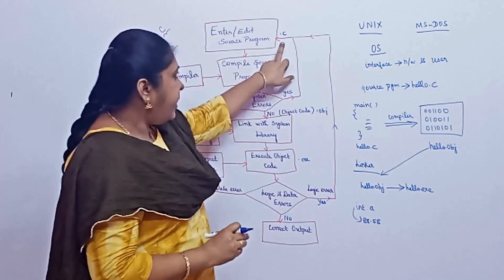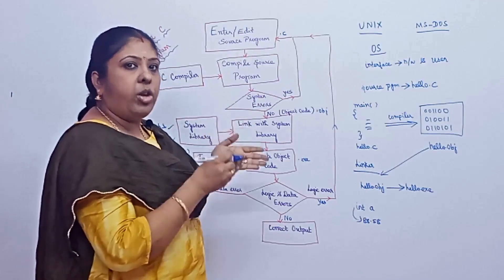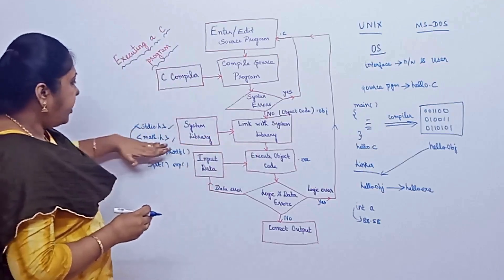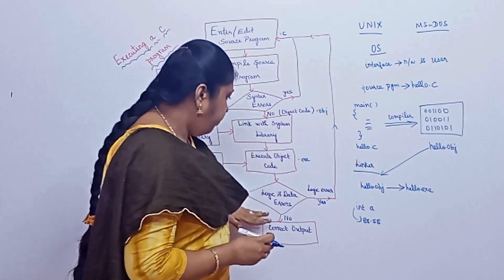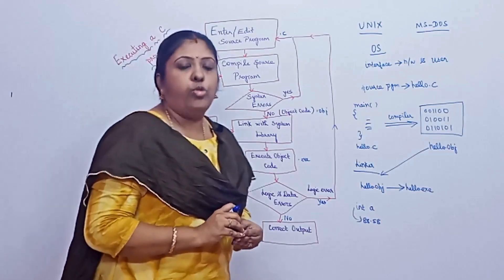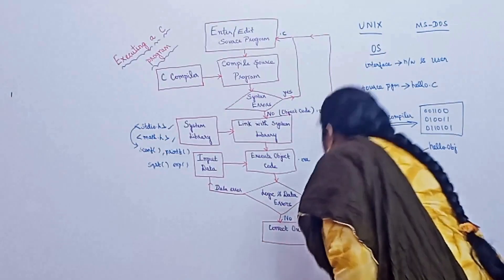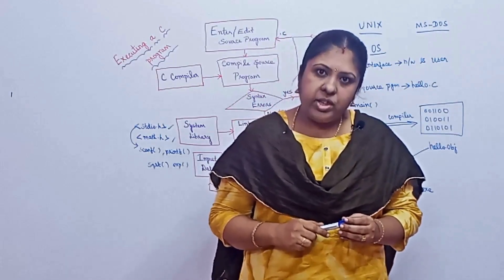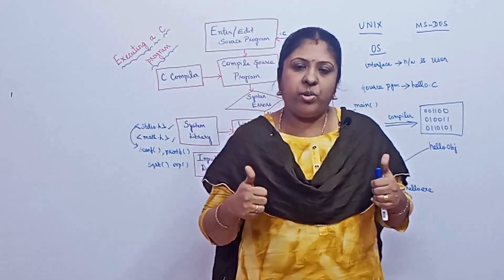A small recap: enter the source program with the .c extension (hello.c), then compile — checking for syntax errors such as punctuation marks, semicolons, or open/closed braces — then link with the system library (stdio.h, math.h for input/output or mathematical functions), then execute the object code, and finally check for logic and data errors to get the correct output. This is the entire procedure for executing a C program. If you find this video useful, share it with your friends and leave a thank you comment. Catch you all in the next video — keep supporting Sai Suryas Academy.